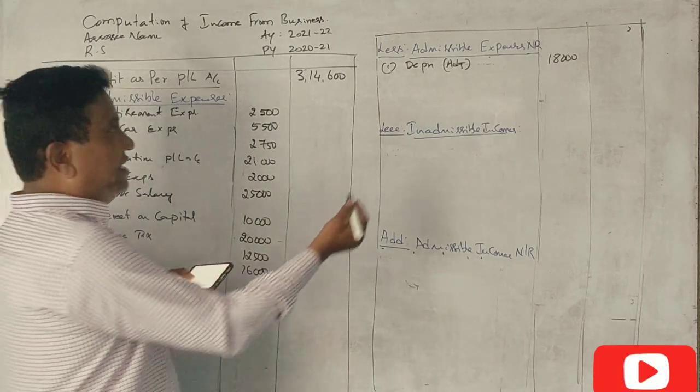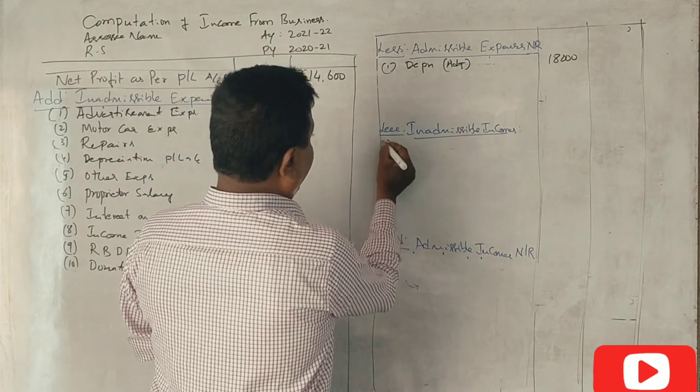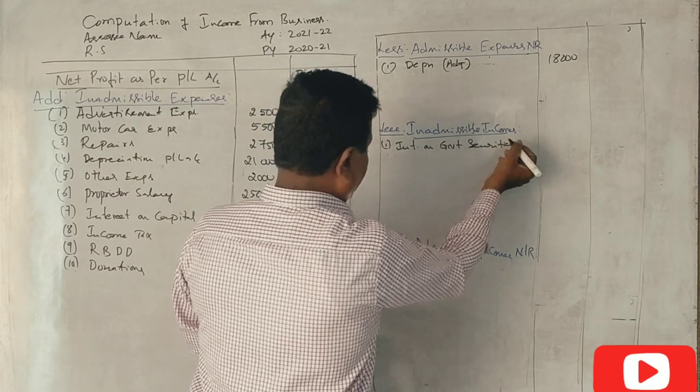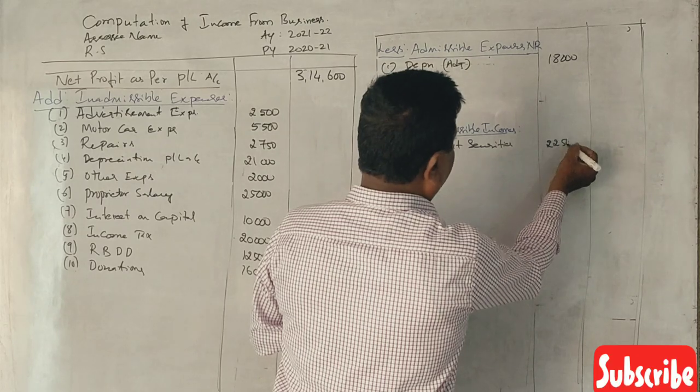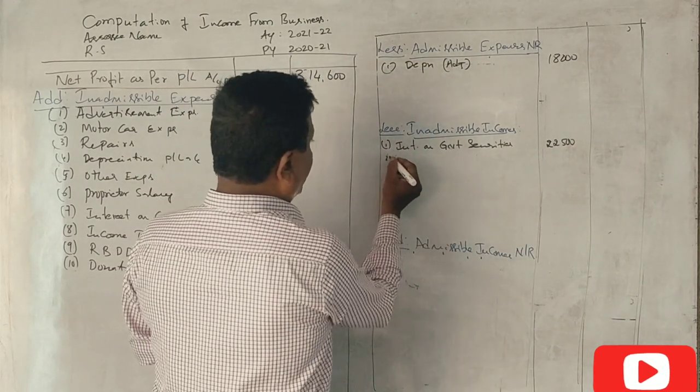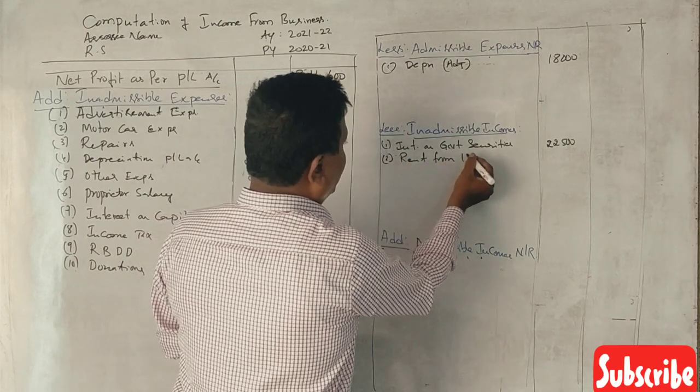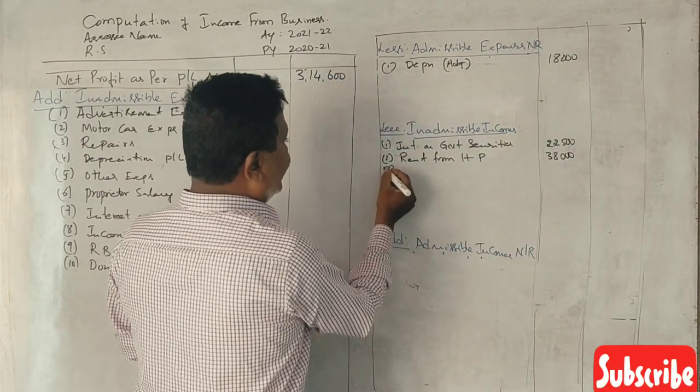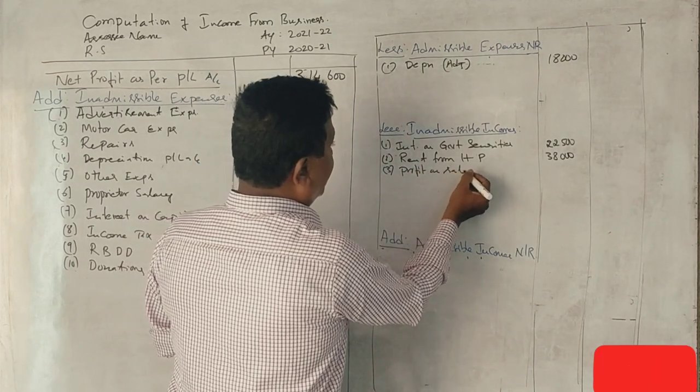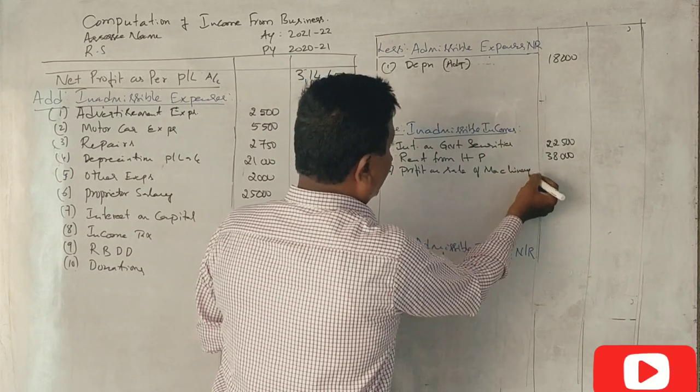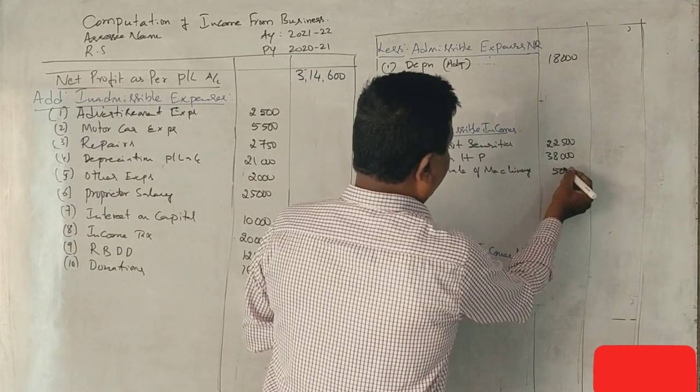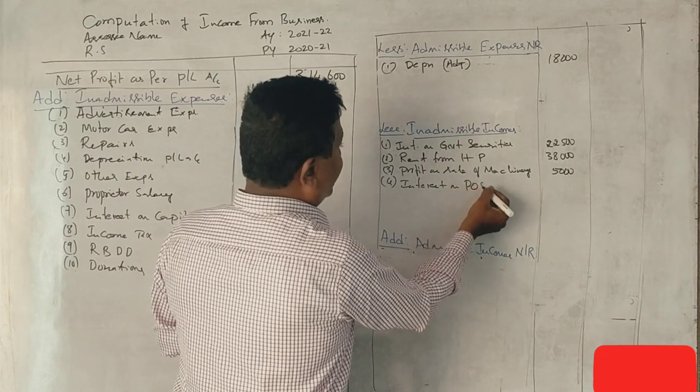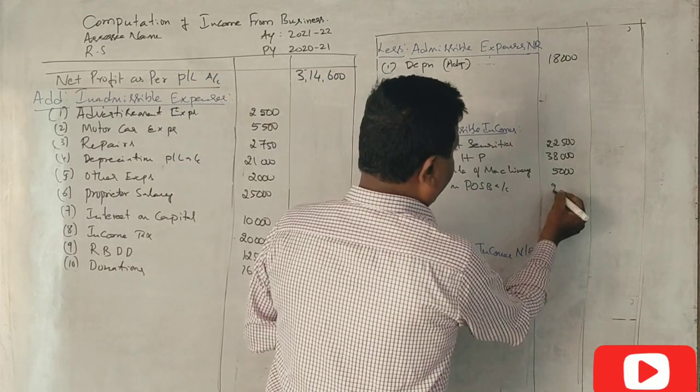First one is interest on government securities, 22,500. Next, rent from house property, 38,000. Profit on sale of machinery, 5,000. Interest on post office savings bank account, 2,500.